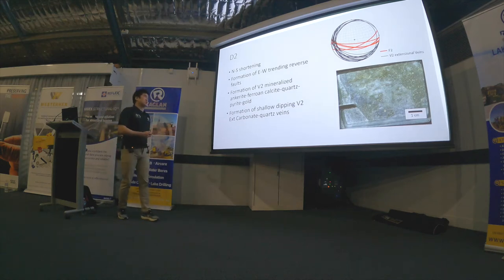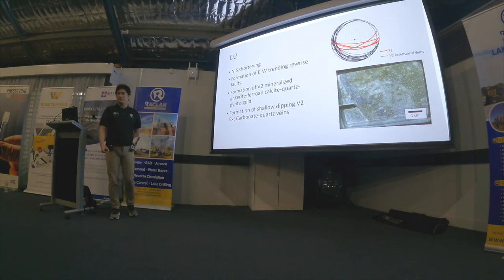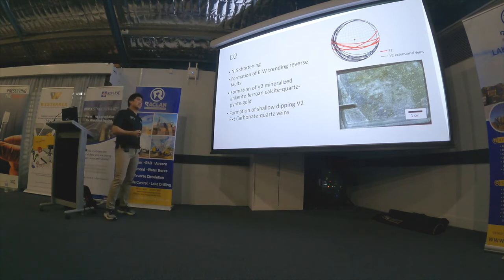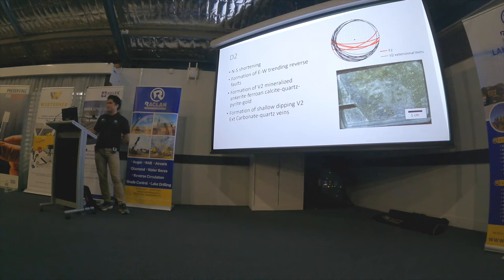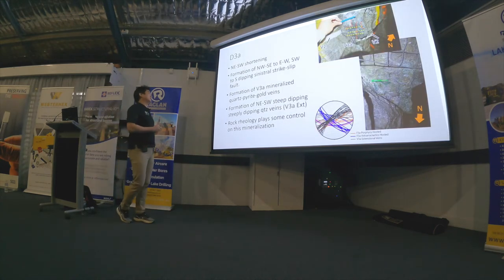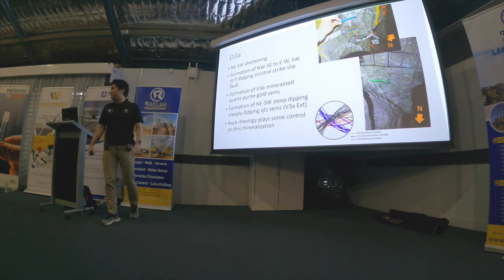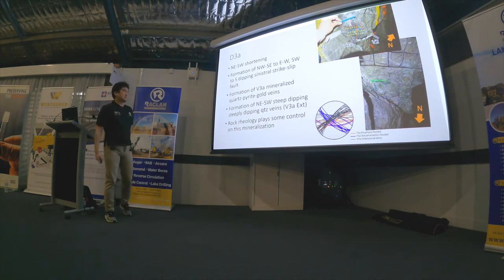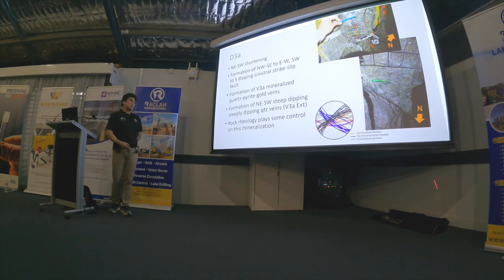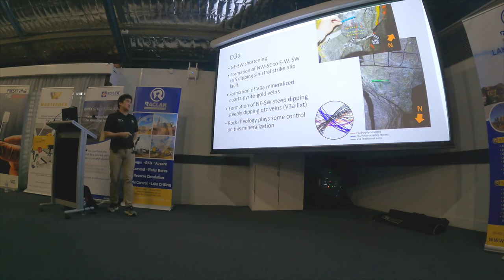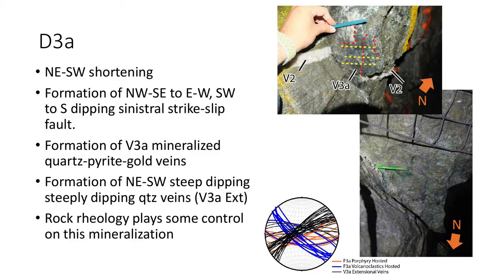Following on is the north-south shortening deformation, identified by east-west trending reverse faults and shallow-dipping extensional veins. This is associated with V2 mineralized carbonate with ferroan calcite, quartz, pyrite, and gold. Later is the main mineralization stage in the Kanoona Belt deposit — northeast-southwest shortening, the famous late-stage deformation in the Yilgarn Craton area — with northwest-southeast to east-west sinistral strike-slip faults and shear veins hosting late V3a mineralized quartz, silica-rich pyrite and gold veins, also with steep-dipping extensional veins.